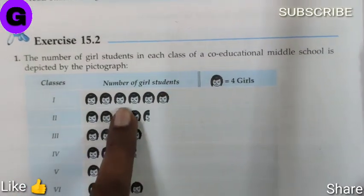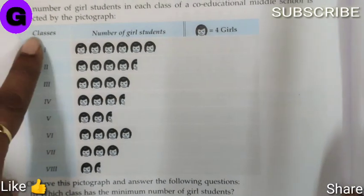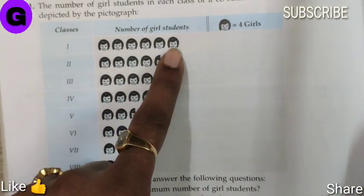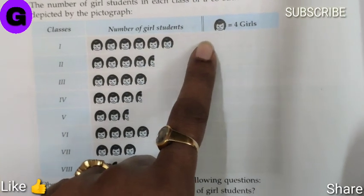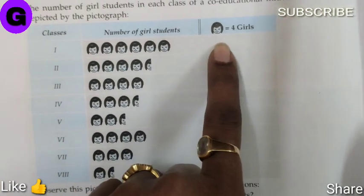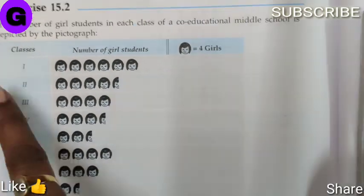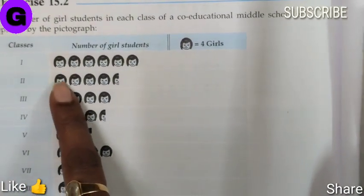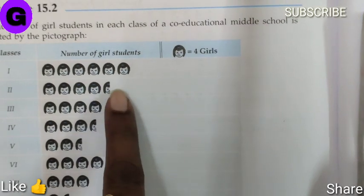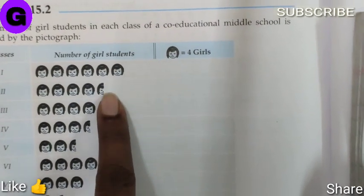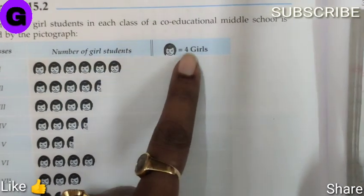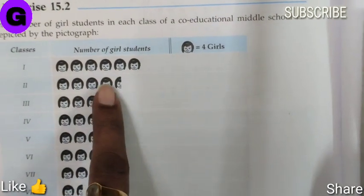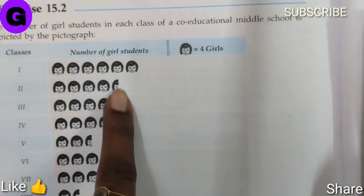These are the number of girl students. Classes 1 has 6 faces, so 6 times 4 equals 24. Next, class 2 has 4 faces plus half a face. Half of 4 is 2, so 4 times 4 is 16, plus 2 equals 18.